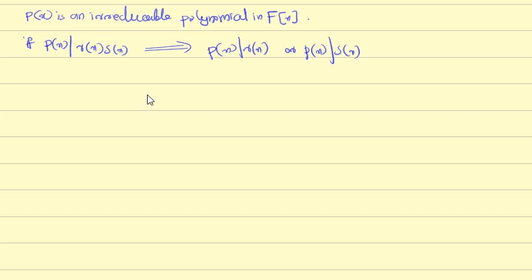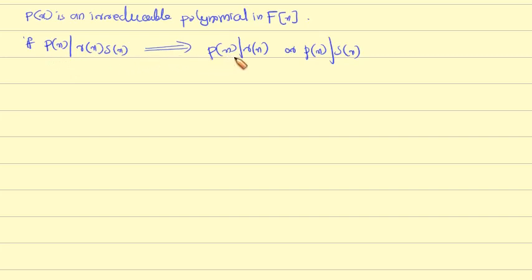Theorem: p(x) is an irreducible polynomial in F[x]. If p(x) divides r(x) times s(x), then p(x) divides either r(x) or p(x) divides s(x). Proof.